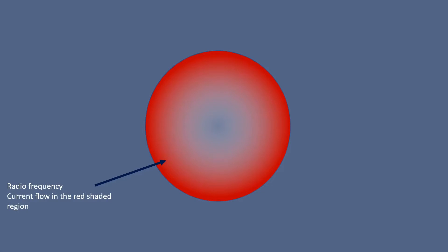This impedance zone — a no current flowing zone — is shown in the picture. The red shaded zone is the radio frequency or AC current flowing zone, and at the center of the conductor there is an impedance zone, meaning no current flows there. The impedance zone becomes bigger from its center to the surface of the conductor with increasing frequency.